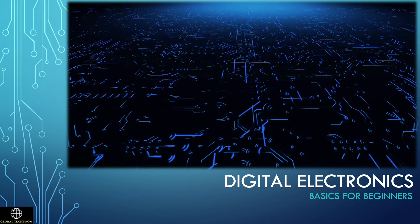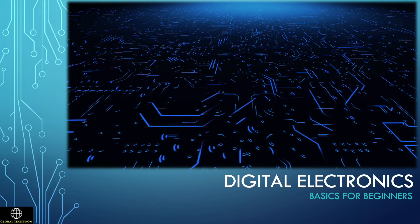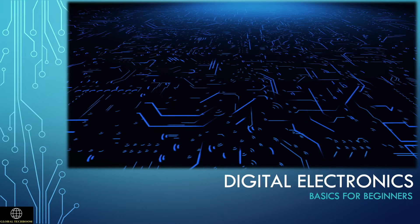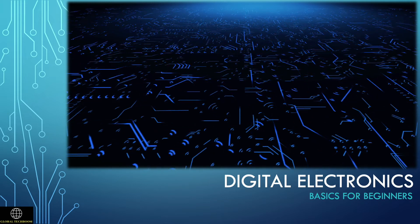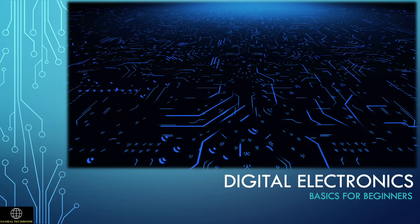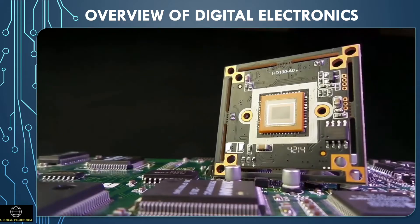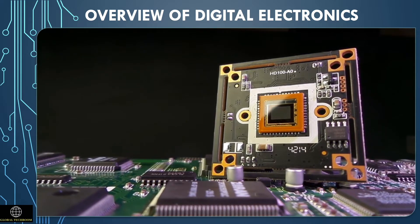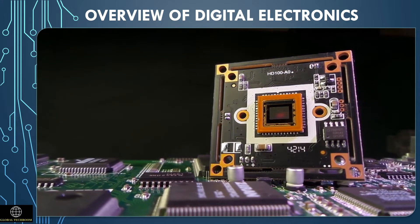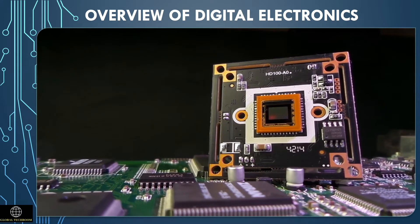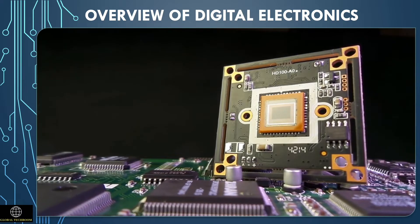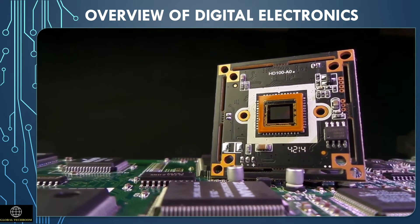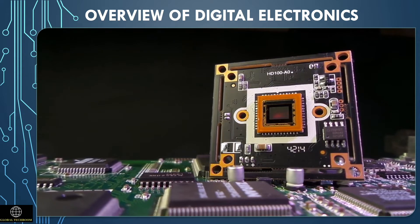Zeros and ones stored inside the computer's memory are used to encode numbers using the binary number system. Any device that uses digital information uses digital electronics. Digital electronics is a field of electronics that deals with the study of digital signals. Those electronic systems have electric circuits with only two states: on and off. The switching logic of on and off uses a series of ones and zeros to communicate and store circuit information.